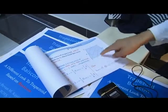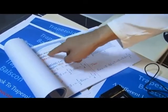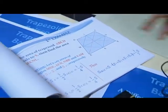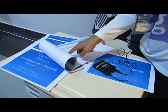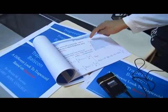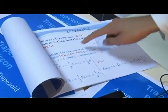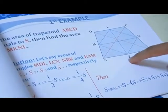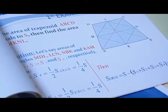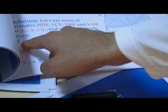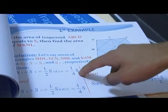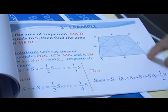For example, if the area of trapezoid ABCD equals S, find the area of MKNL. Let us say that the areas of triangles MDL, LCN, NBK, and KAM are S1, S2, S3, and S4 respectively. We get the conclusion that the sum of areas S1 and S4 equals half of the area of AKLD and one quarter of the area of ABCD.